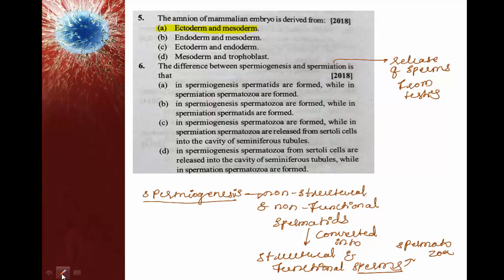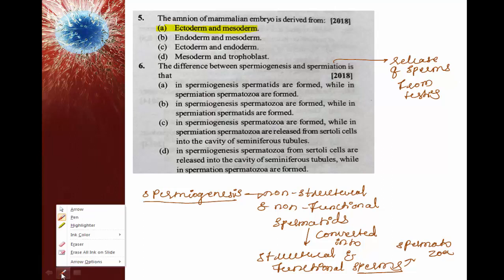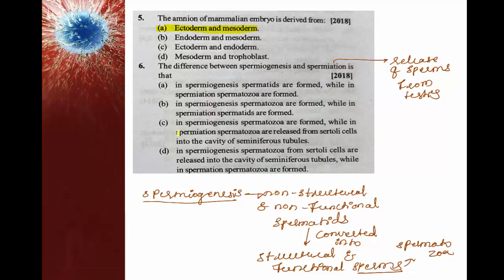Looking at option C: in spermiogenesis, spermatozoa are formed, while in spermiation, spermatozoa are released from Sertoli cells and finally exit the testis. So the right option for this question is option C.